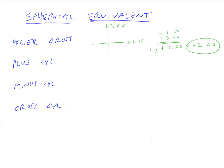When we are in plus cylinder notation, the plus cylinder notation for this lens is plus one plus two axis 180. We figure out the spherical power of this lens and the spherical equivalent of the cylindrical component. The spherical power of the plus one lens is plus one. The spherical equivalent of a cylindrical lens that's plus two power is half of that — so it's plus one. The spherical equivalent of plus two axis 180 is plus one. Plus one plus one is plus two.